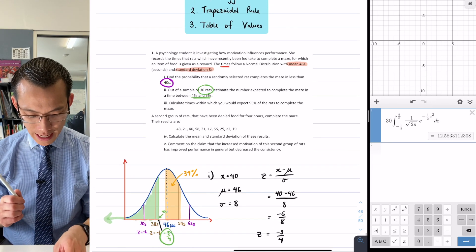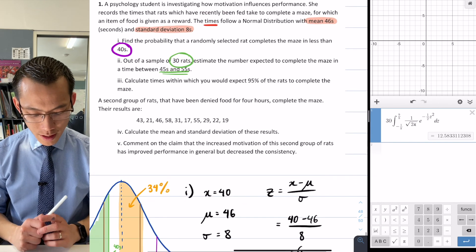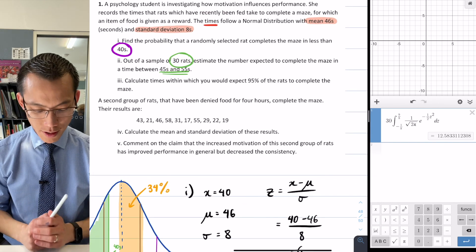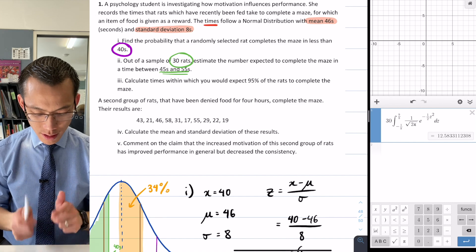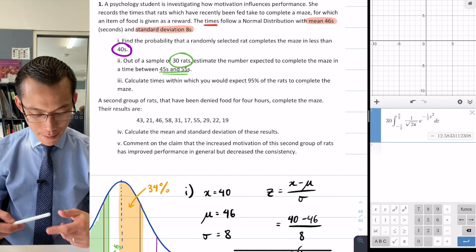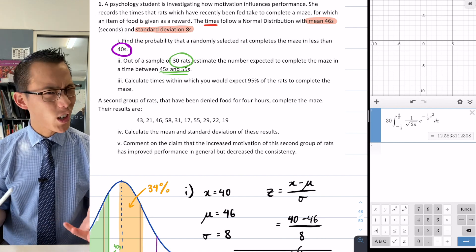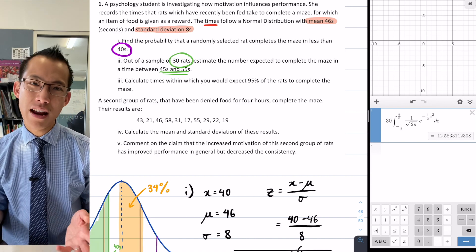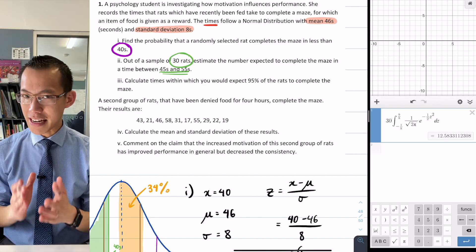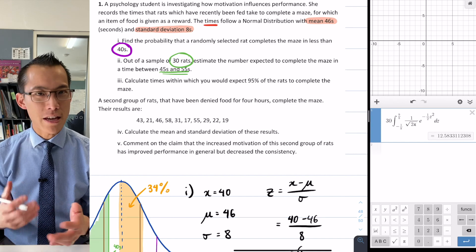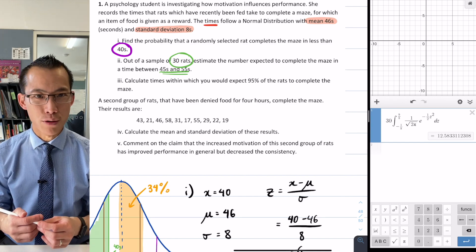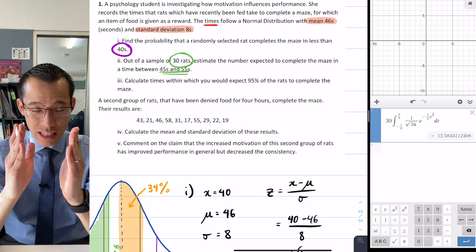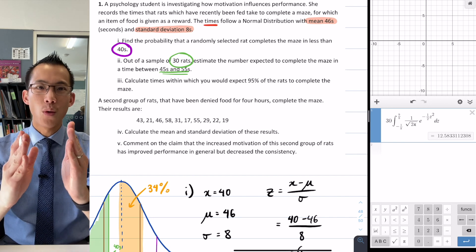All right, so part one, part two done. Let's have a look at this: calculate times within which you would expect 95% of the rats to complete the maze. So this question is unique among all the rest of them in that we actually don't really need technology to do this, because 95% is one of the nice neat numbers that we got from the empirical results around the normal distribution. We know that within one standard deviation we get 68%; within two standard deviations, that's when we get 95%.